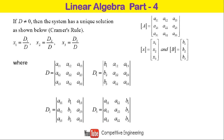We find the determinant values D, D1, D2, and D3. Then x1 = D1/D, x2 = D2/D, and z = D3/D. For easy understanding, these substitution positions are marked in red.